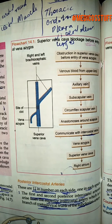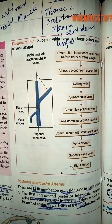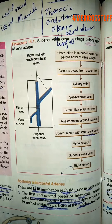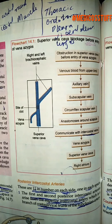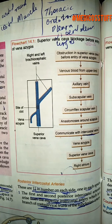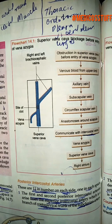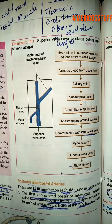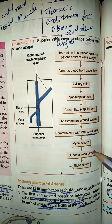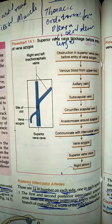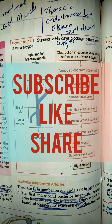So when the SVC block takes place before the entry of the azygos vein, all the blood will go into the azygos vein and then into the superior vena cava, and finally into the right atrium. Thank you.